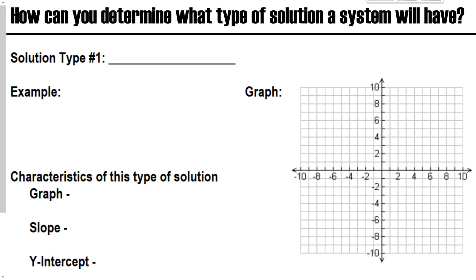All right, so we're going to start with the one you use the most, the one you see the most often, which is a one solution. An example would be like y equals x minus 2, and y equals negative one-half x plus 1.